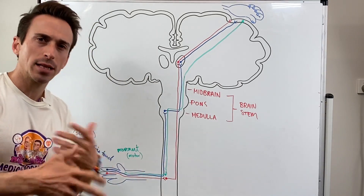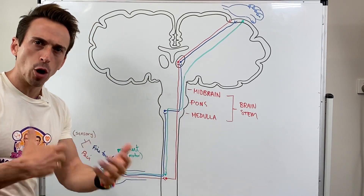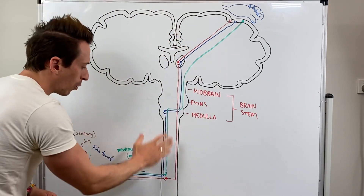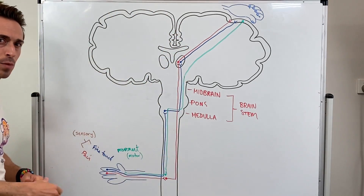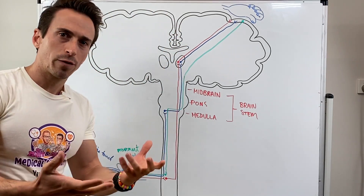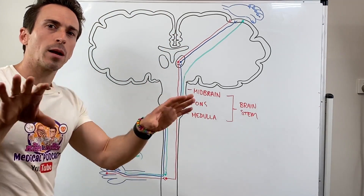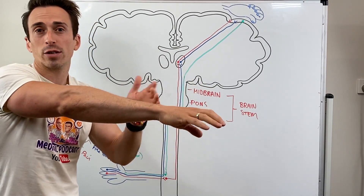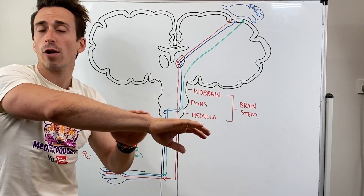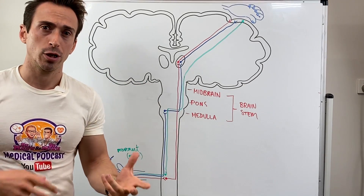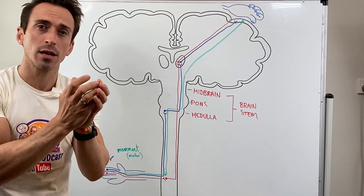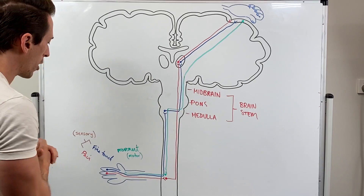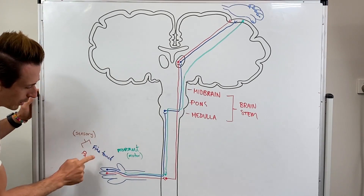Before we begin we need to talk about sensory information and motor information — information going toward the brain and information coming away from the brain. When we look at sensory information, let's break it up into two different types: fine touch, which is somebody rubbing your arm, and pain and temperature. Pain and temperature can be bundled together because they move by the same pathways to the brain.